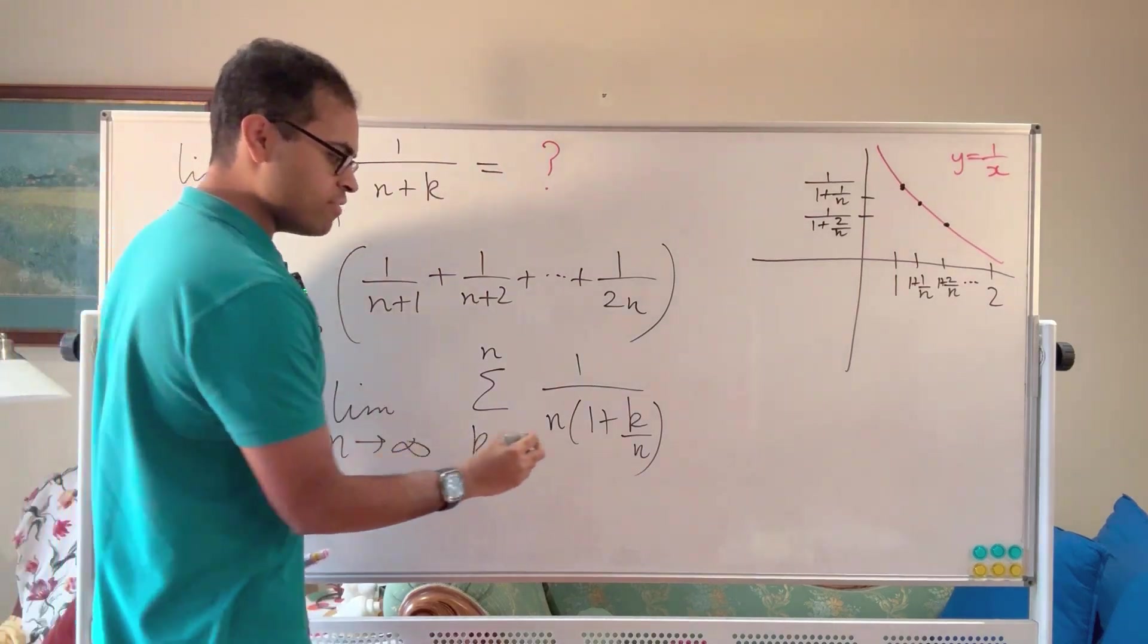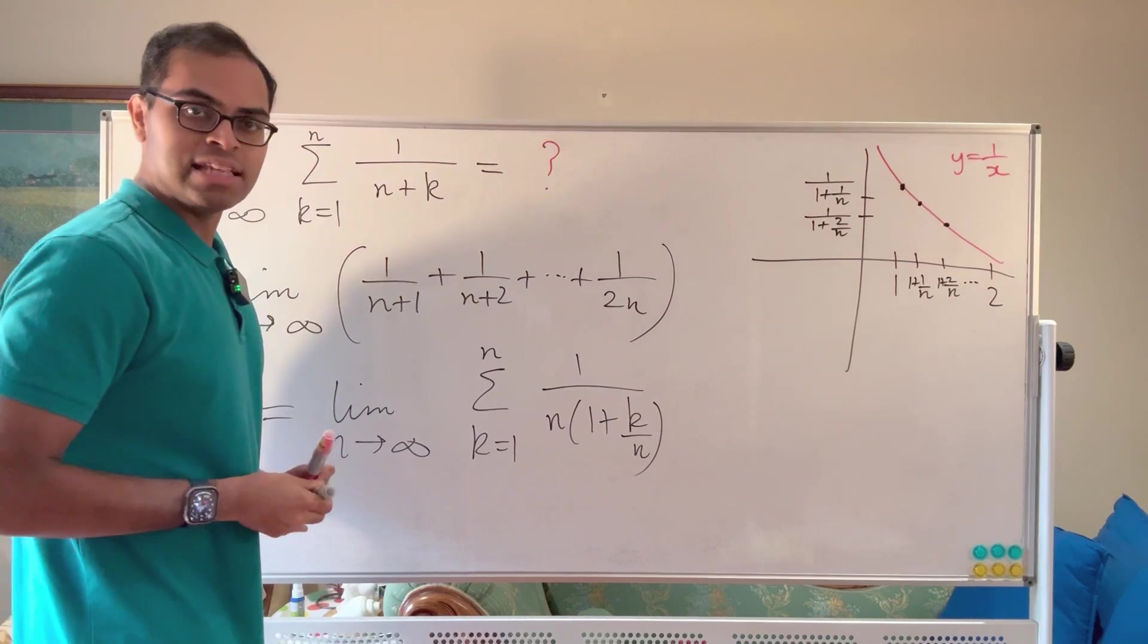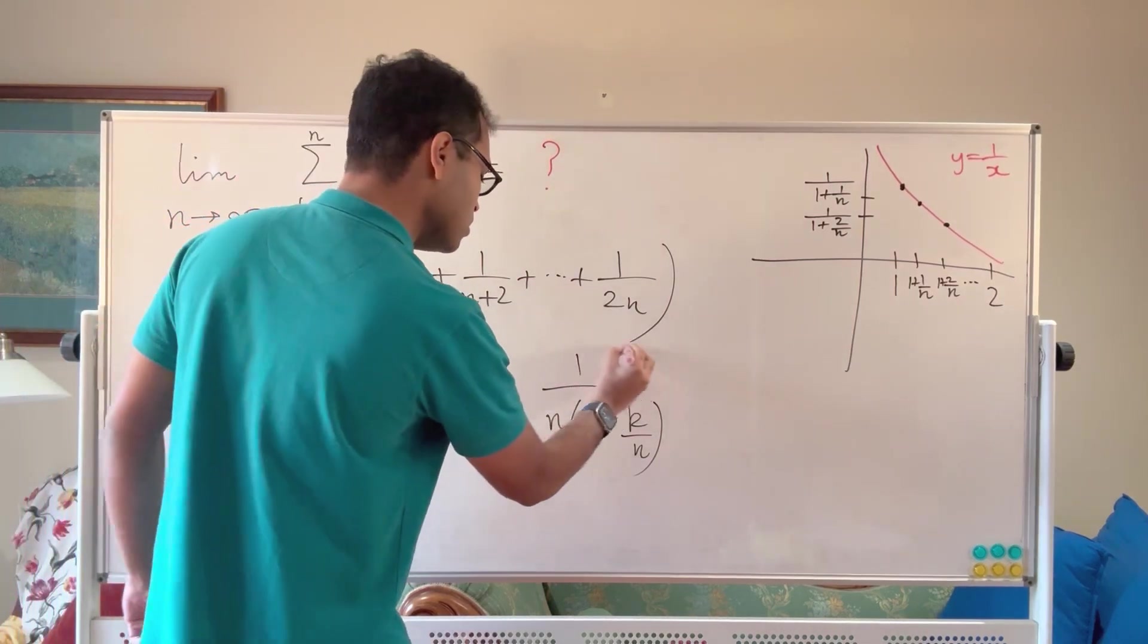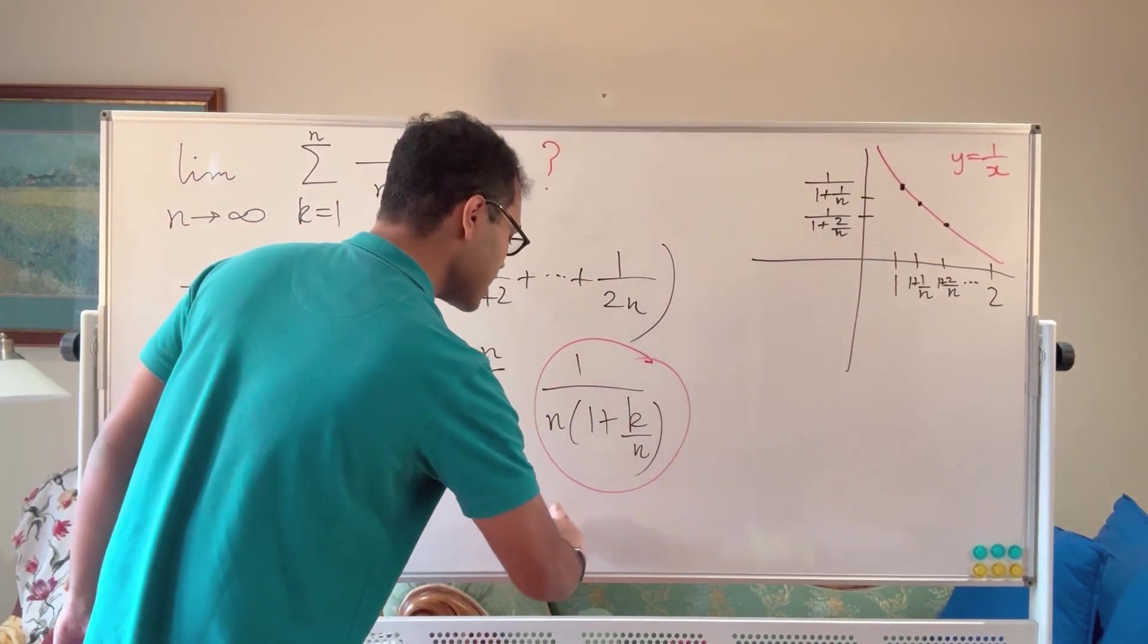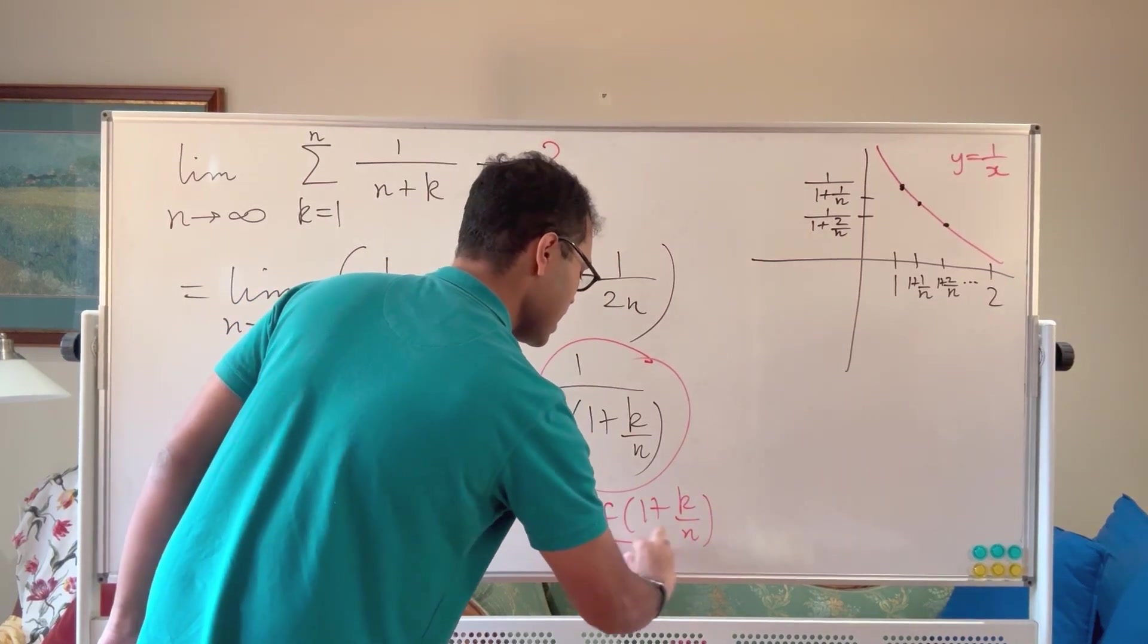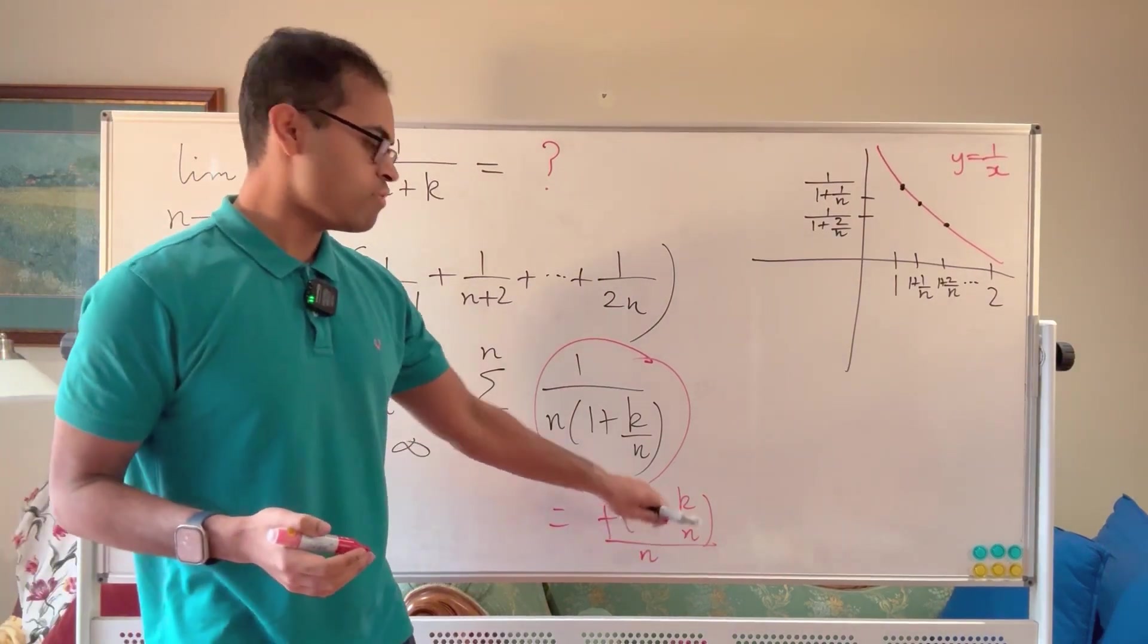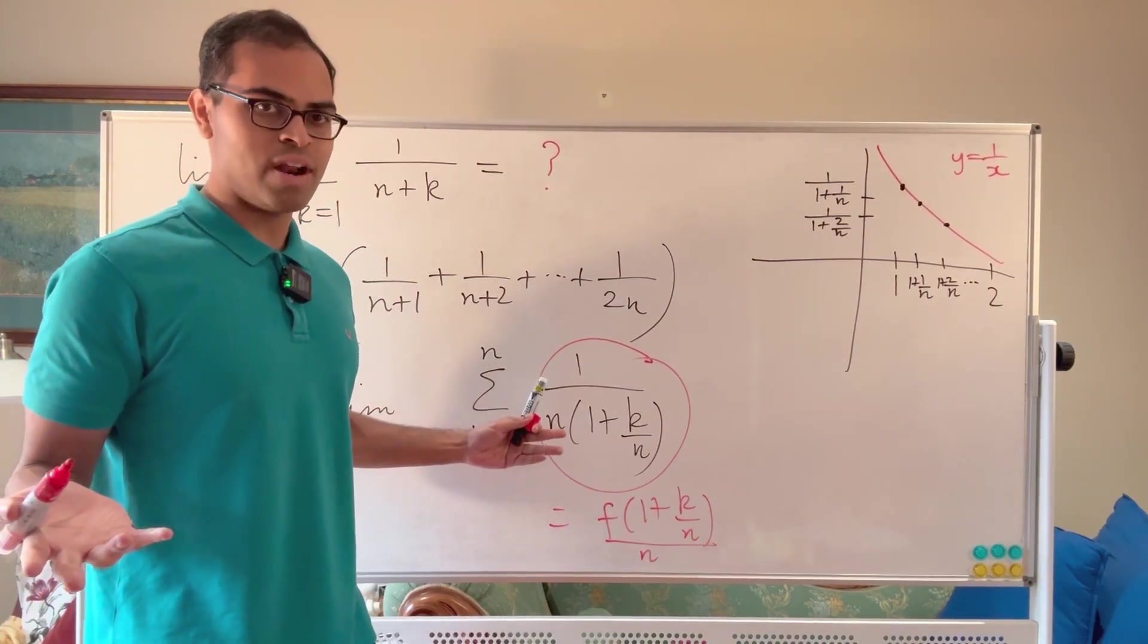And now you observe that you're seeing this in this expression. Because if you actually just isolate this, I'm just going to look at this expression here. It's actually equal to f of 1 plus k over n divided by n, right? 1 over n times that, because f of 1 plus k over n is 1 over 1 plus k over n.